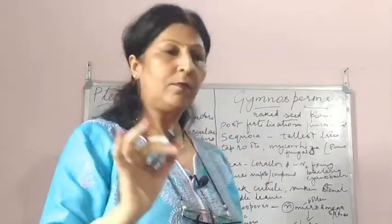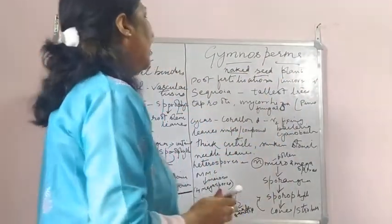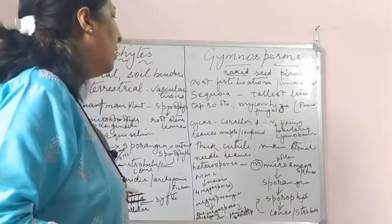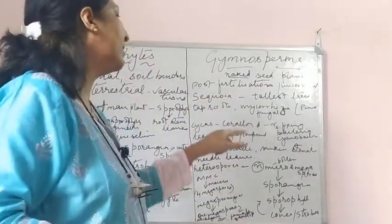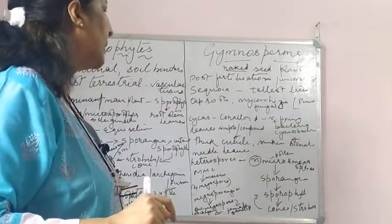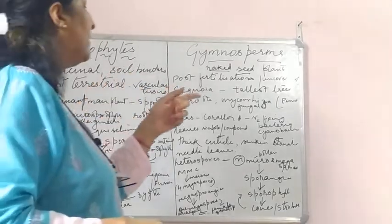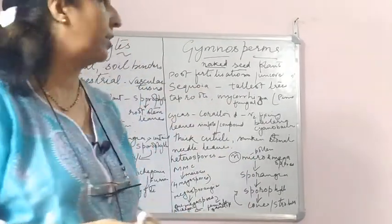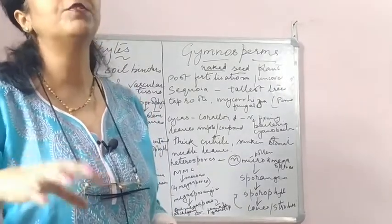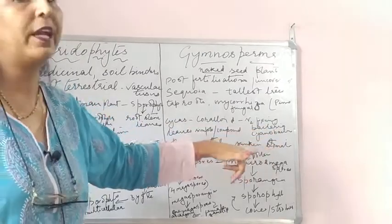Now let's come to gymnosperms. Gymnosperms are naked seed plants because the seeds are formed after fertilization and remain uncovered. One species is Sequoia, which is the tallest tree in gymnosperms. They have tap roots, and in Pinus the root has a mycorrhiza association - a fungal association forming mycorrhiza.